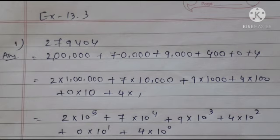First one: 279404. 2 ke baad kitne digits hai - 7, 9, 4, 0, 4, so 1, 2, 3, 4, 5. So 2 ke baad 5 zeros: 200000. Plus 7 ke baad 4 digits, so plus 70000. 9 ke baad 3 digits, so plus 9000. 4 ke baad 2 digits, so plus 400. 0 hai, so 0. Plus 4.